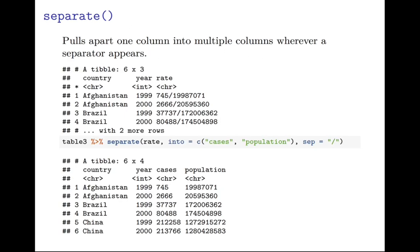Another useful function that gets used a lot in tidying your data is separate. This pulls apart one column into multiple columns wherever a separator appears. Here you can see in our first table, table three, that you have a column called rate. That is two numbers separated by a backslash. You can use separate and specify the column you want to separate out. You tell it what you want your columns to go into - cases and population. Then you have to tell it what the separator is. Here we're specifying that the separator is that backslash. And then you get the resulting table.